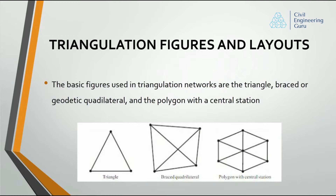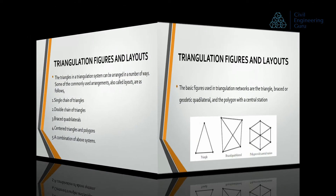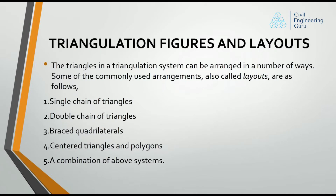The basic figures used in triangulation networks are the triangle, braced or geodetic quadrilateral, and the polygon with a central station. Triangles in a triangulation system can be arranged in a number of ways. Commonly used arrangements, also called layouts, are: single chain of triangles, double chain of triangles, braced quadrilaterals, centered triangles and polygons, and a combination of above systems.